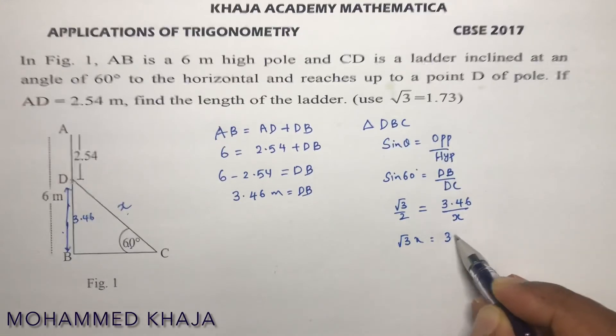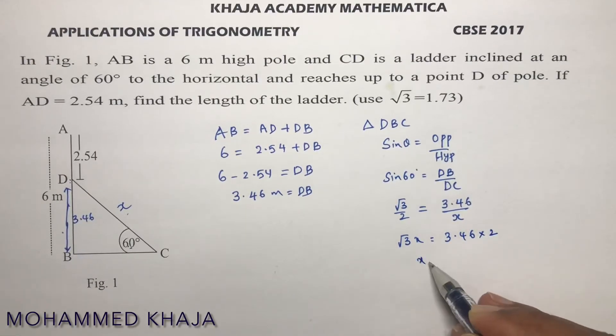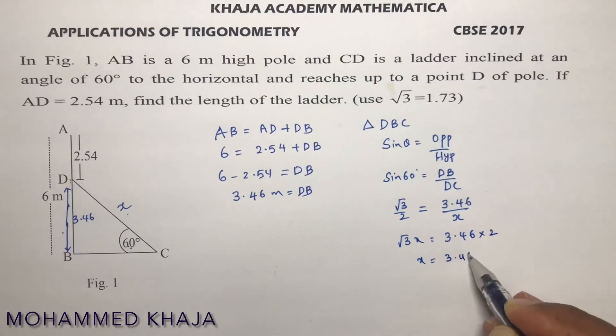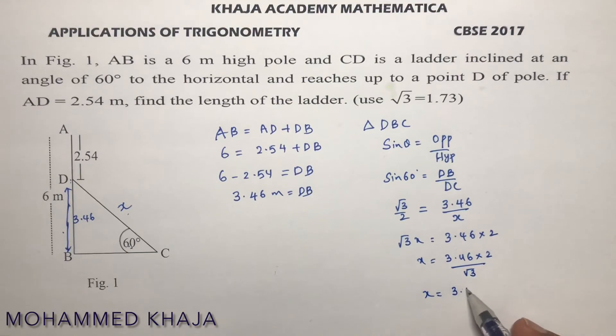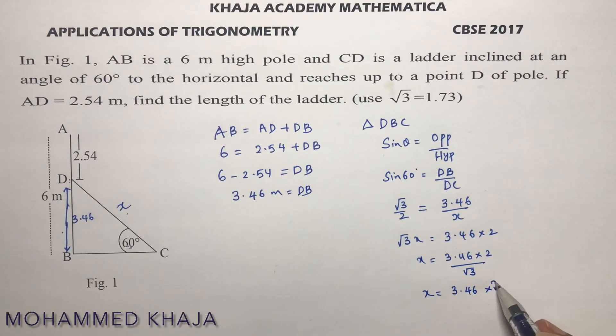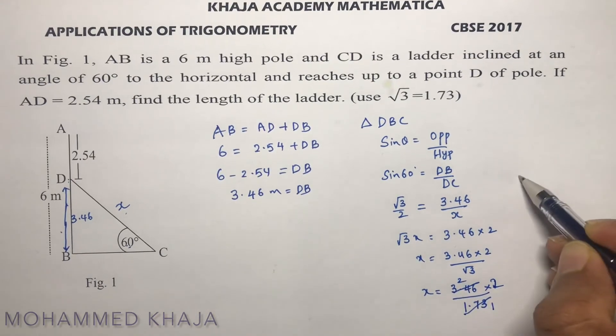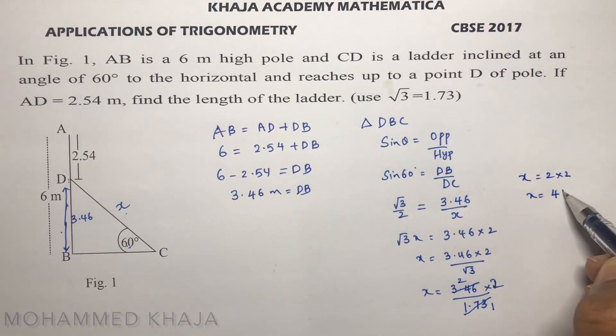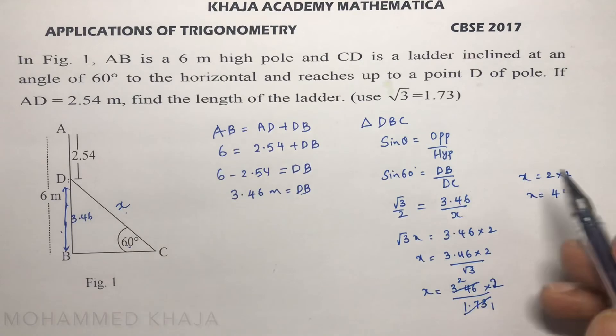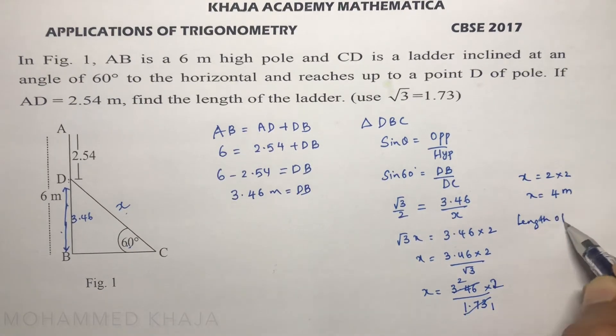So root 3 X equals 3.46 into 2. Therefore X equals 3.46 into 2 by root 3, which is 1.73. So X equals 3.46 times 2 divided by 1.73, which equals 4 meters. Length of the ladder is 4 meters.